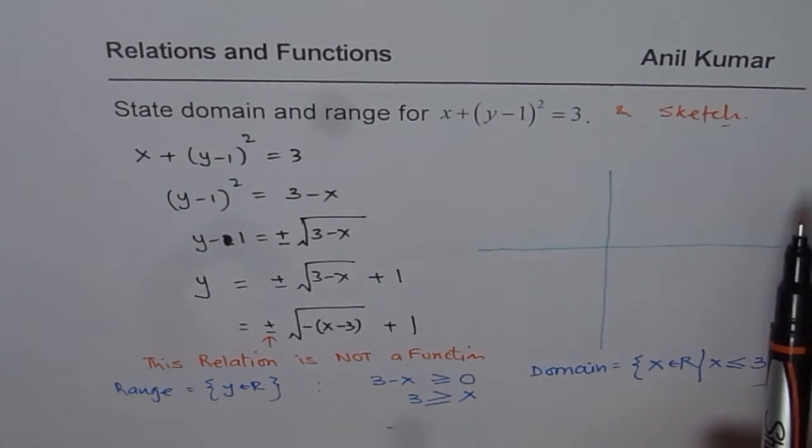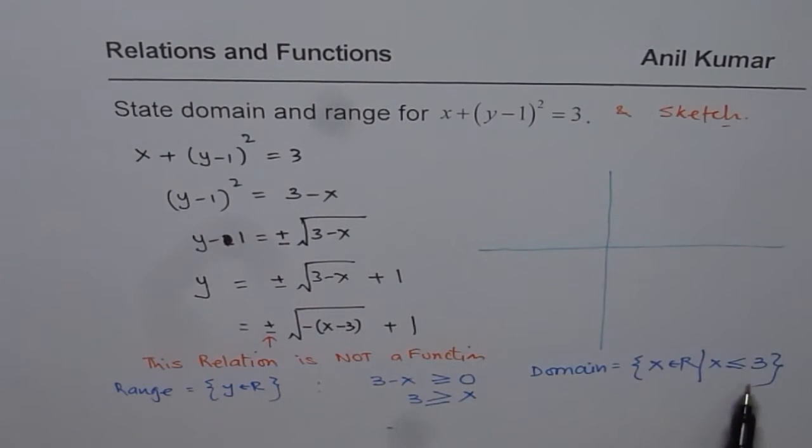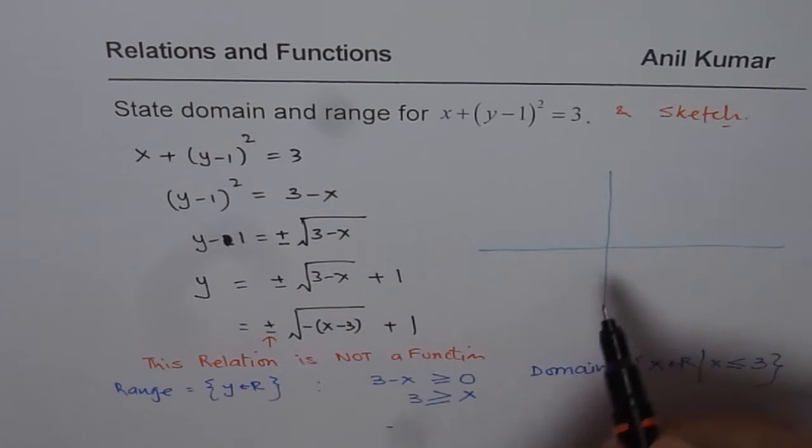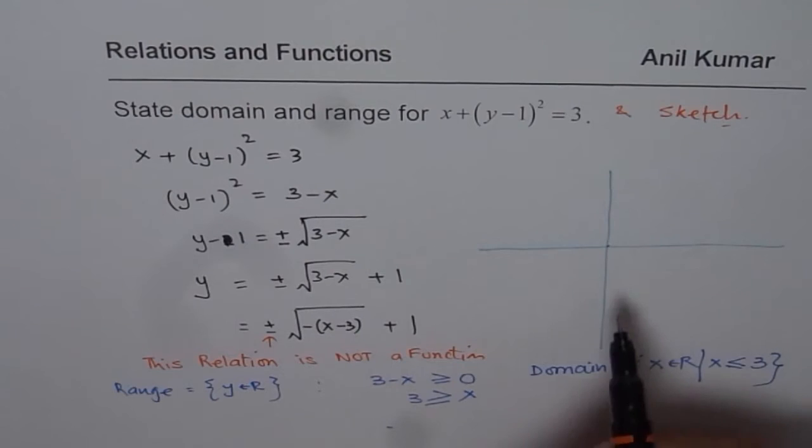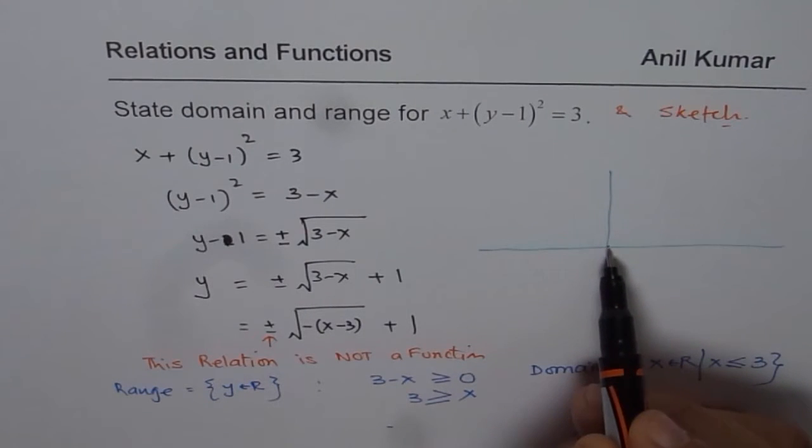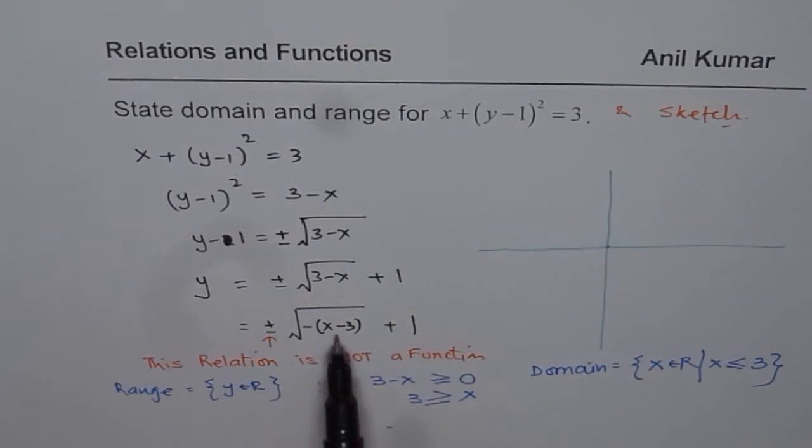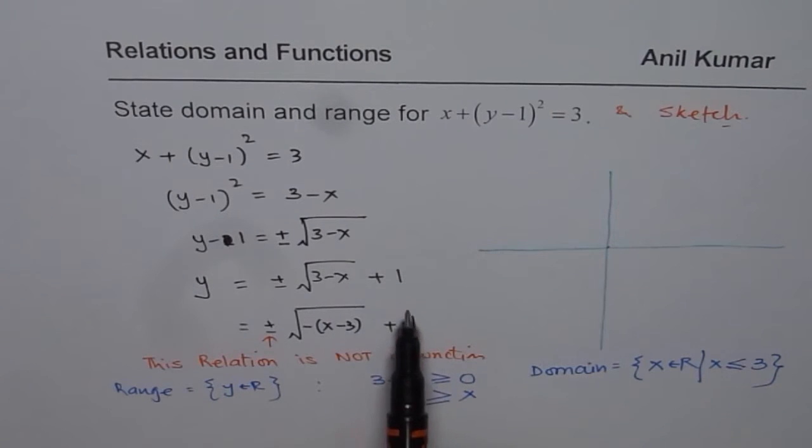To sketch this function, you can always take few values in this domain. Or you could transform this square root function with all the transformations and then sketch it. What you'll find here is that from the origin, this point moves to three units to the right, one unit up.